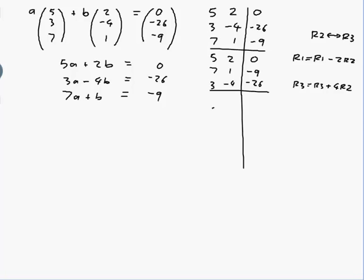So let's see, I haven't changed row 2. Row 1 minus 2 of row 2, so 5 minus 2 times 7 would be 5 minus 14, which would be -9. 2 minus 2 times 1 is 0, as we hoped, and 0 minus 2 times -9 would be plus 18. Okay, so down at the bottom I have row 3 plus 4 of row 2. So 3 plus 4 times 7 would be 3 plus 28, which would be 31. -4 plus 4 times 1 is 0, -26 plus 4 times -9 would be -26 minus 36, which would be -62.